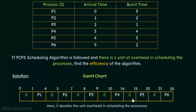Before P5 gets the CPU, we wait for 1 unit of time — from 14 to 15. P5 executes for 5 units of time, from 15 to 20. 15 plus 5 is 20, so P5 uses the CPU up to the 20th unit. Then again there is a delay of 1 unit of time — 20 plus 1 is 21. Finally, P6 gets the CPU at the 21st unit of time and executes for 2 units. 21 plus 2 is 23. This is how we form the Gantt chart for these 6 processes with one unit of overhead.